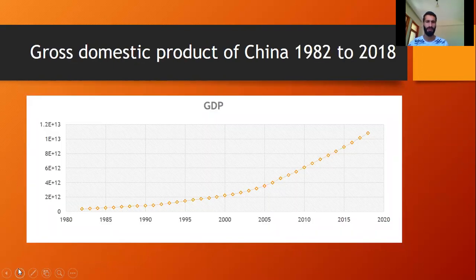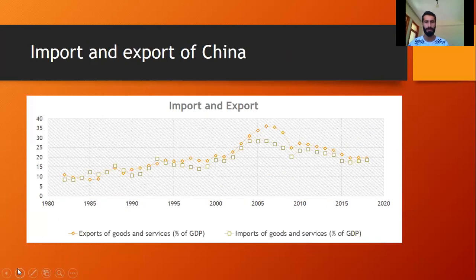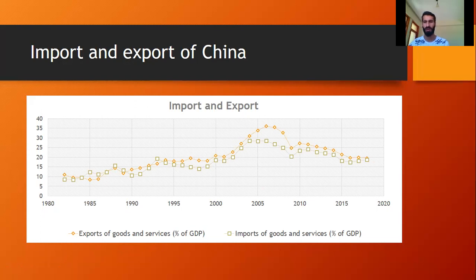As we can see in the GDP graph of China from 1982 to 2018, it has gradually been increasing — and increasing very fast. Looking at the imports and exports graph of China, both were increasing, although from 2005 to 2009 it was near the peak, and after that it decreased slightly. One thing to remember is that exports are always higher than imports, as you can see in the graph.